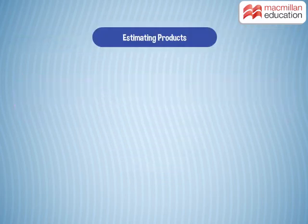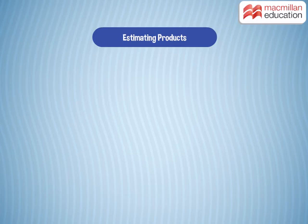There are no hard and fast rules for rounding off for multiplication. The numbers are rounded off in such a way to get an estimated product that is closer to the exact answer. Take a look at this example.